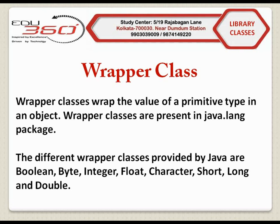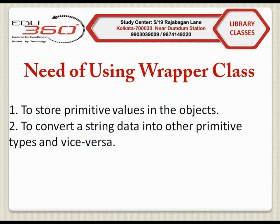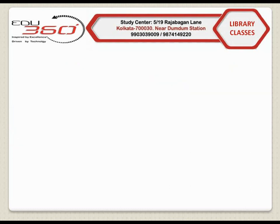Wrapper classes wrap the value of a primitive type in an object. Java uses wrapper classes that are a part of the java.lang package. Whenever an object of a wrapper class is created, a field in memory is allocated to contain a primitive data value. For example, Integer is a wrapper class that contains primitive data type int, with functions like Integer.parseInt to convert a string into an integer, and Integer.toString to convert an integer data type to a string. Wrapper classes are needed to store primitive values in objects and to convert string data into primitive types and vice versa. Note that primitive data types start with a lowercase letter whereas their corresponding wrapper class starts with an uppercase letter.